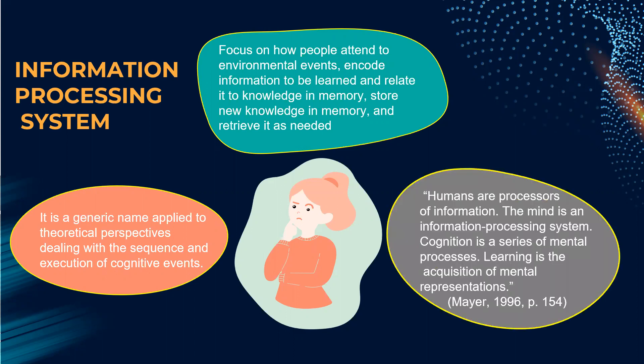The basic tenets of the information processing system are that humans are processors of information, the mind is an information processing system, recognition is the series of mental processes, and learning is the acquisition of mental representations.